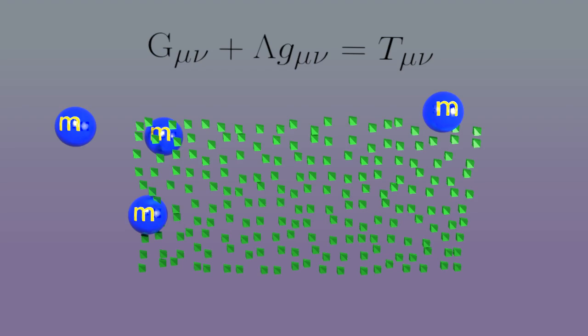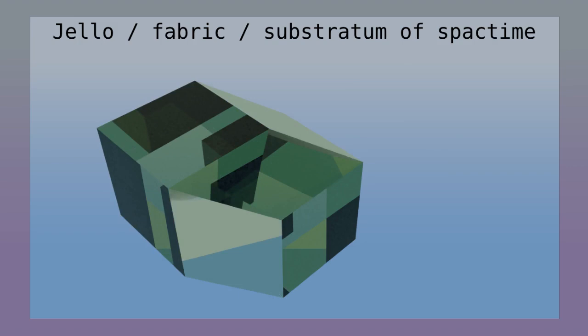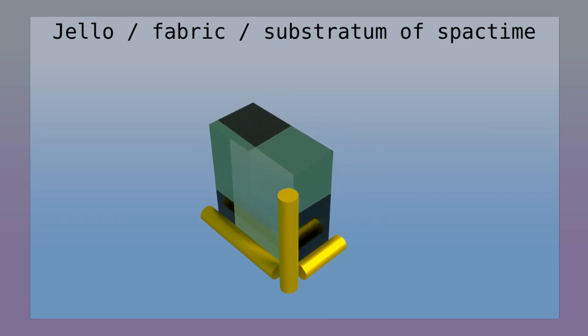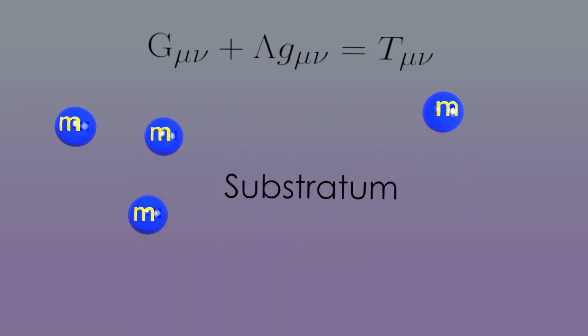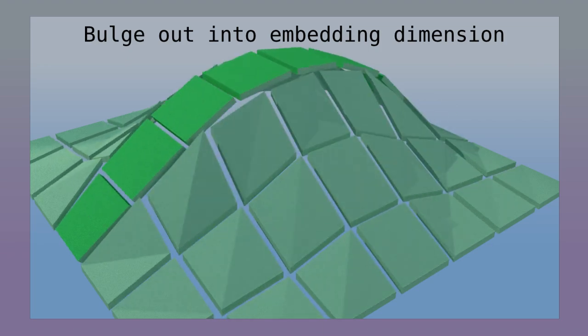When you read about general relativity, space-time is often described as a fabric or a jello that deforms, and I have a series of videos visualizing space-time in this way. Such a jello obeys the same mathematics as general relativity. But again, we cannot take this fabric apart. We haven't detected any atoms of space-time. So the jello is a substratum. We can imagine other substrata for space-time. For example, instead of deforming in place, the fabric could be stiff and bulge out into a fifth dimension. I compare these two substrata in my other videos.